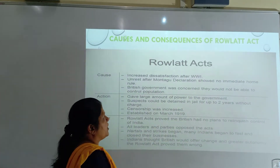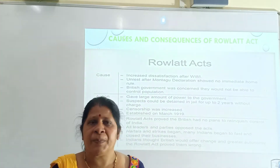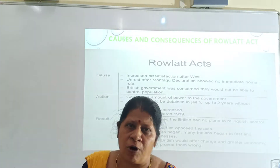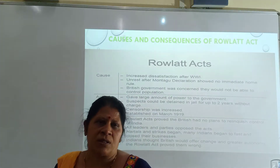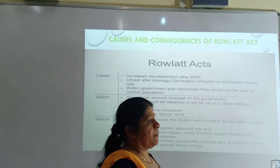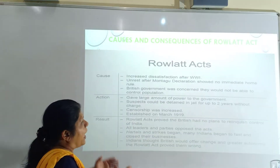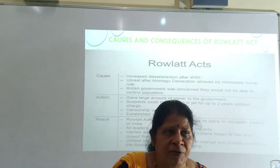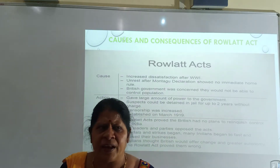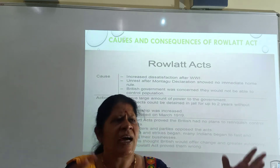Increased dissatisfaction after World War I. The British were never in a mood to fulfill the promises they had made to the Indians. They always followed a policy of making false promises and then postponing things, keeping them in the pipeline. When the time came to fulfill those promises, they would simply postpone. So dissatisfaction among the Indian masses grew and people were asking when the promises would be fulfilled, how long they were supposed to wait.